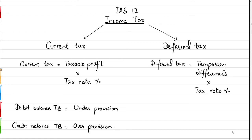When we talk about current tax, the provision we create can sometimes be more than what we have actually paid, or sometimes less. If you have a debit balance in the trial balance, it creates an under-provision, meaning you created less provision in the previous year compared to what you paid. If it is a credit balance, then it means it was an over-provision, meaning more tax was provided than was actually paid.